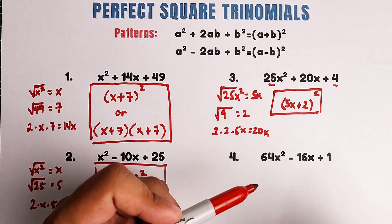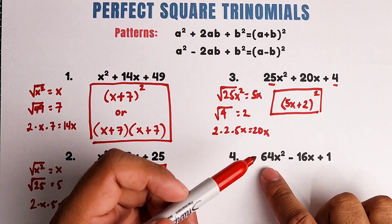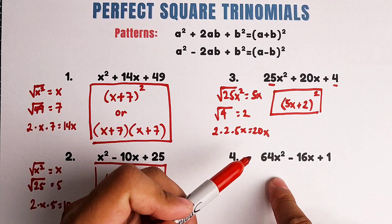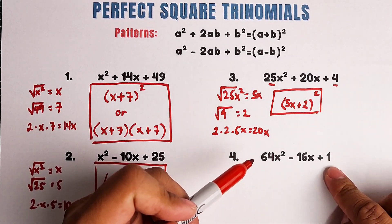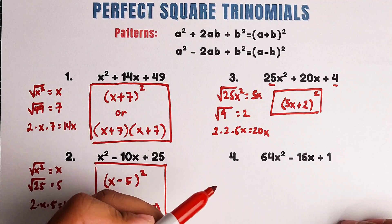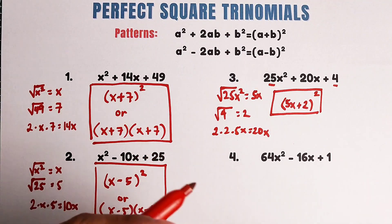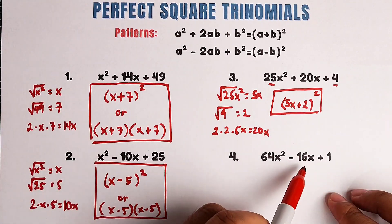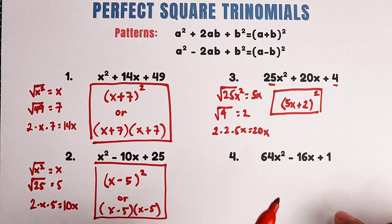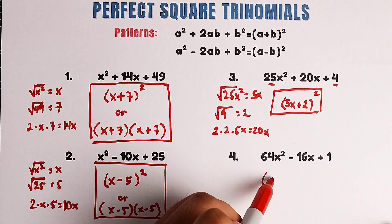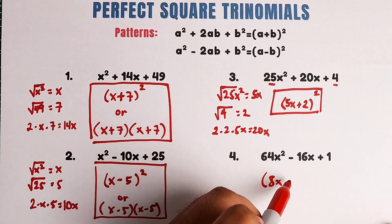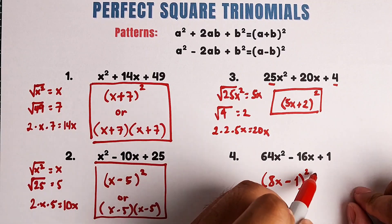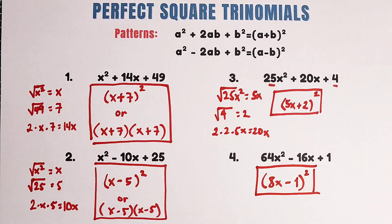Now let's try to do mental calculation only. The square root of 64 is 8. The square root of x squared is x, meaning this is 8x. The square root of 1 is 1. Then we multiply: 2 times 8x times 1, that is 16x. And as you can see, we've got 16x, meaning this is a perfect square trinomial. So the answer is: 8x, then copy the sign which is minus, the square root of 1 which is 1 — giving us 8x minus 1, squared. And this is the correct answer for item number 4.